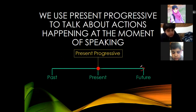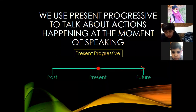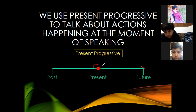Since it is a line with past, present, and future, we call it a timeline. For present progressive, it's over here — it started a little bit in the past and has reached the present.